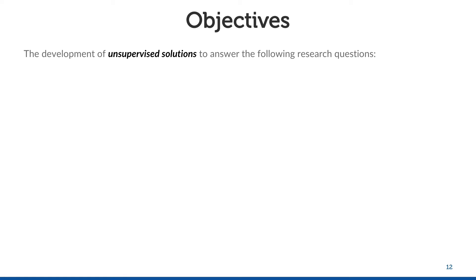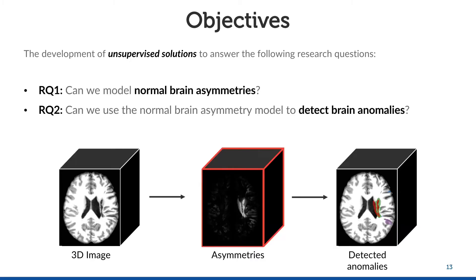The objective of my PhD was the development of unsupervised solutions to answer the following research questions: Can we model normal brain asymmetries? And can we use the normal brain asymmetry model to detect brain anomalies?